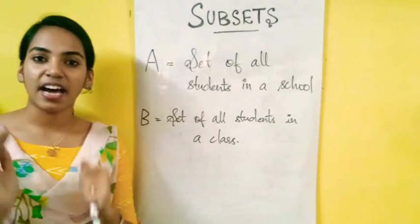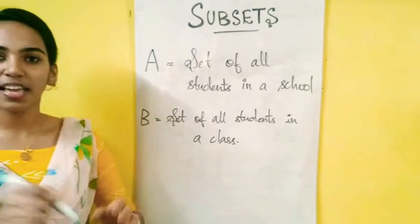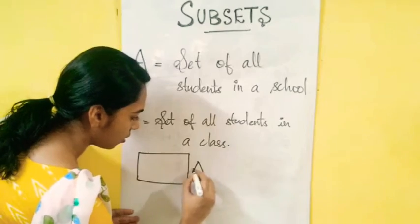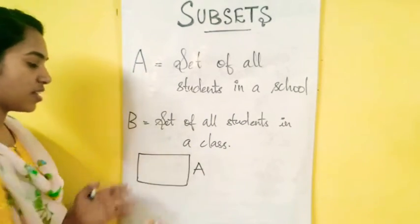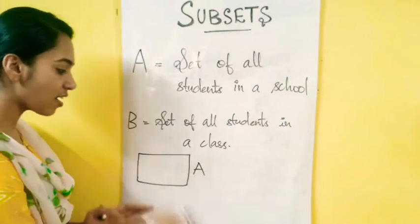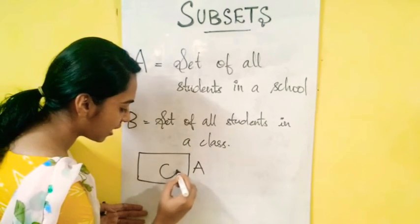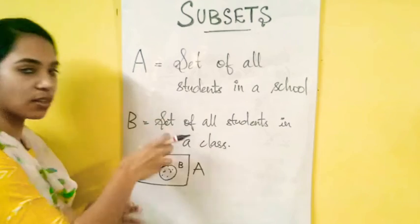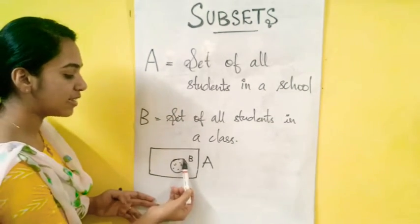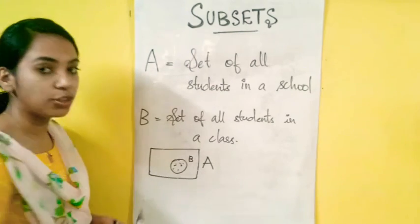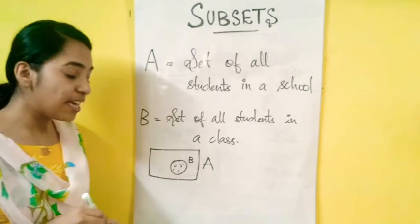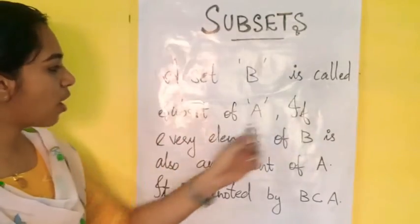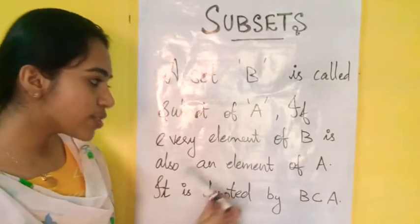If we think that the students are all students, all students are included. All students are included in LKG and in the same class. So from this, we can say: a subset of B is called a subset of A if every element of B is also an element of A.